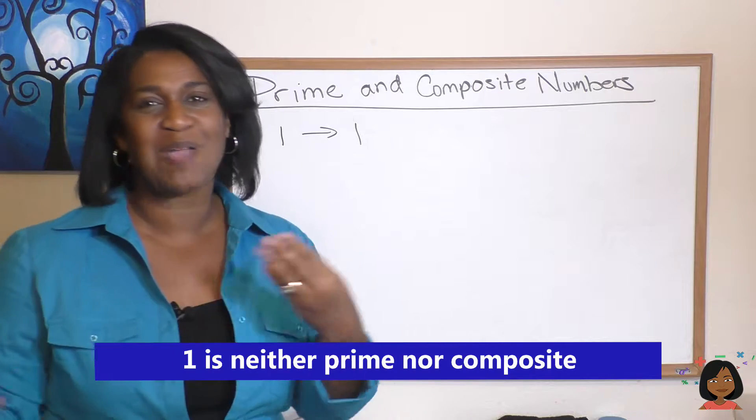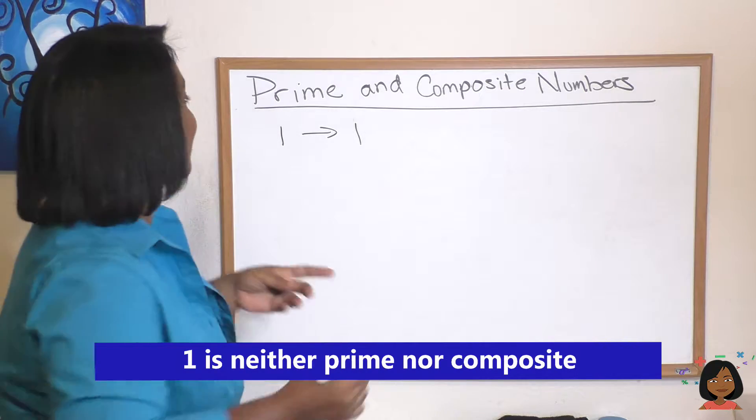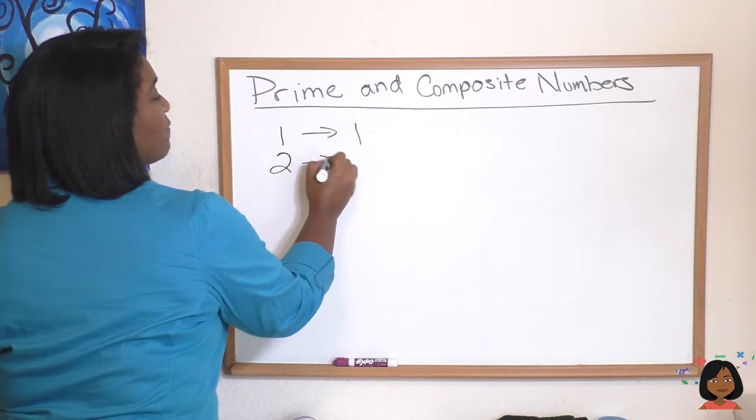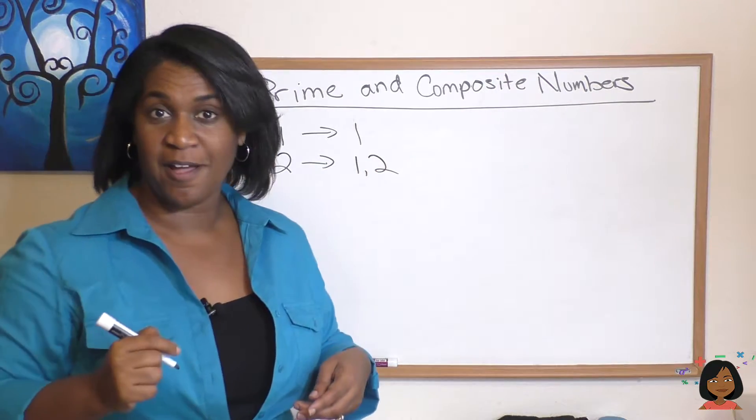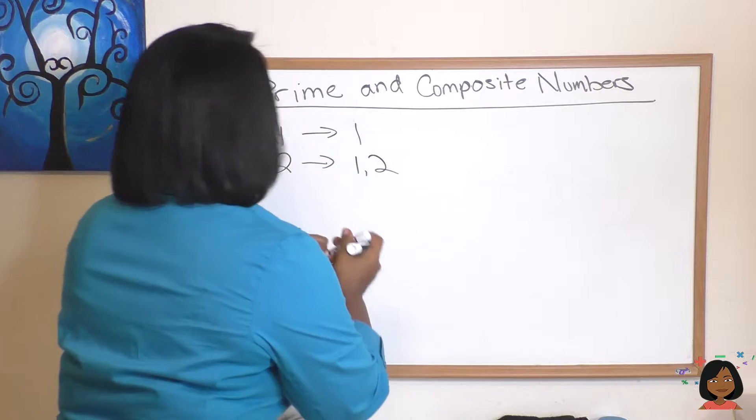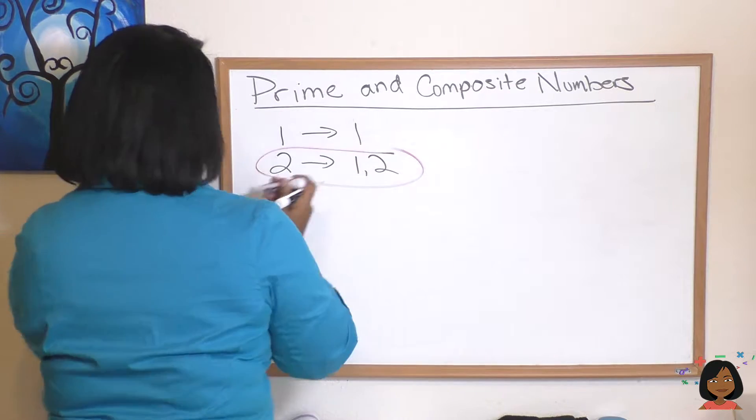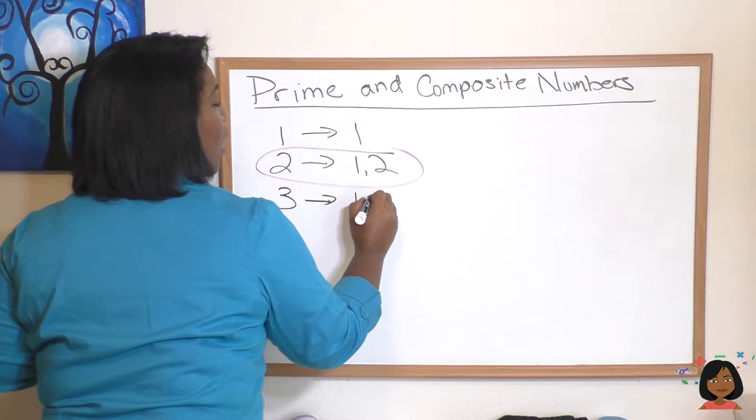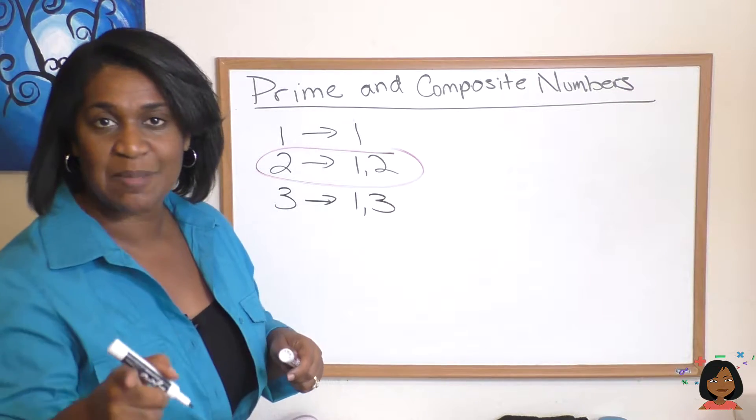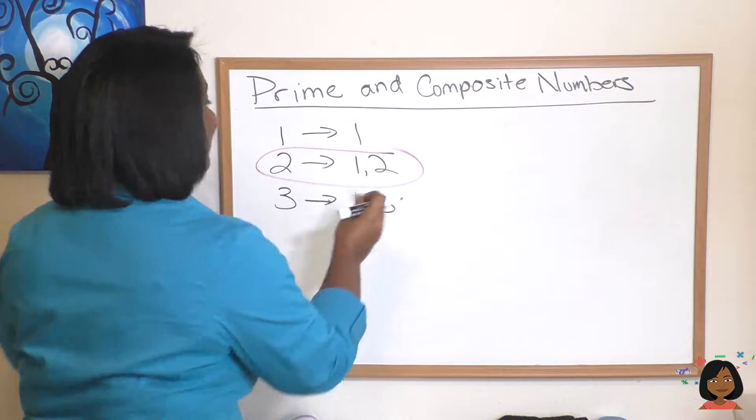Let's take a look at two. The factors of two are one and two, so is two prime? Yes it is, let's circle it. Okay, move on to three. The factors of three are one and three. Does that make it prime? Yes it does, wonderful, keep it moving.